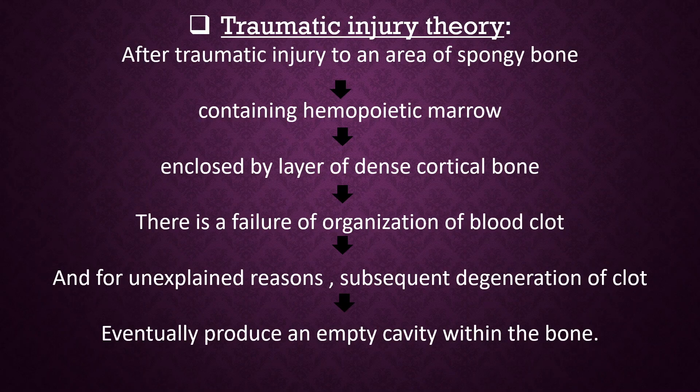Traumatic injury theory: After traumatic injury to an area of spongy bone containing hemopoietic marrow enclosed by a layer of dense cortical bone, there is a failure of organization of the blood clot and, for unexplained reasons, subsequent degeneration of the clot eventually producing an empty cavity within the bone.